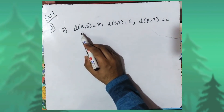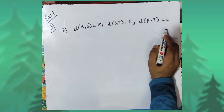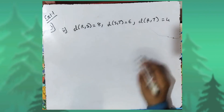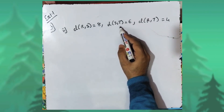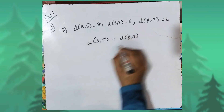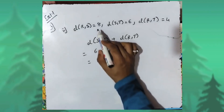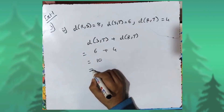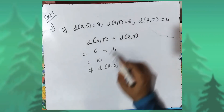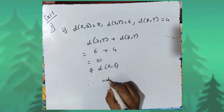In the second sum, distance RS is equal to eight, distance ST is equal to six, and distance RT is equal to four. We add the two smaller distances: distance ST plus distance RT equals six plus four equals ten. The third distance RS is eight, and ten is not equal to eight. Since adding the two smaller distances does not give the third larger distance, the given points are not collinear.